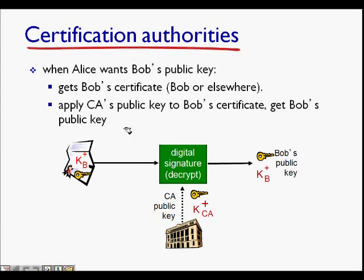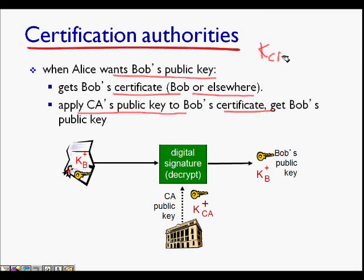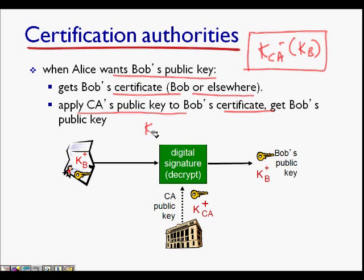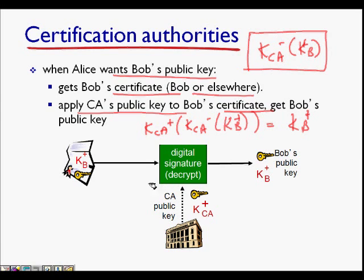When Alice wants Bob's public key, she gets Bob's certificate from Bob or elsewhere. She applies the CA's public key to Bob's certificate. The certificate is basically KCA minus applied to KB of Bob. To get the public key of Bob, she applies KCA plus — the public key of the certification authority — and from here she gets KB, the public key of Bob.